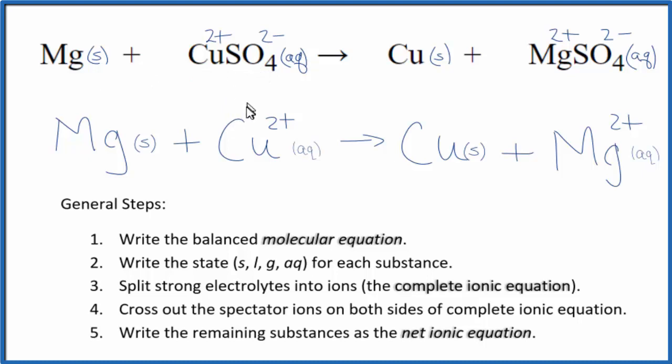You'll notice that charge is conserved. We have a 2 plus on this side, a 2 plus on this side, as well as mass. We have a magnesium atom, magnesium, copper, copper. So, mass is balanced as well.